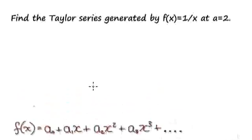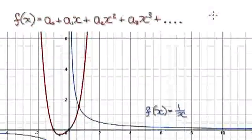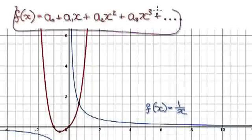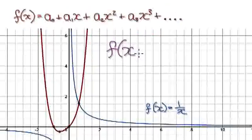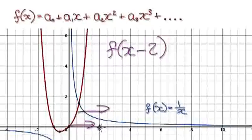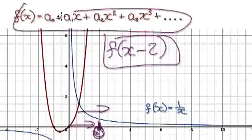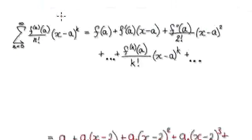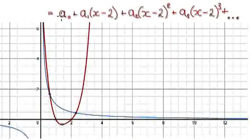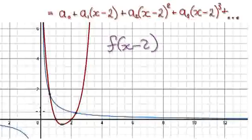Because we are trying to evaluate it at a equals 2, we apply this transformation, which shifts everything across by 2, because we want to evaluate it at x equals 2. So applying this transformation shifts the red line across by 2.